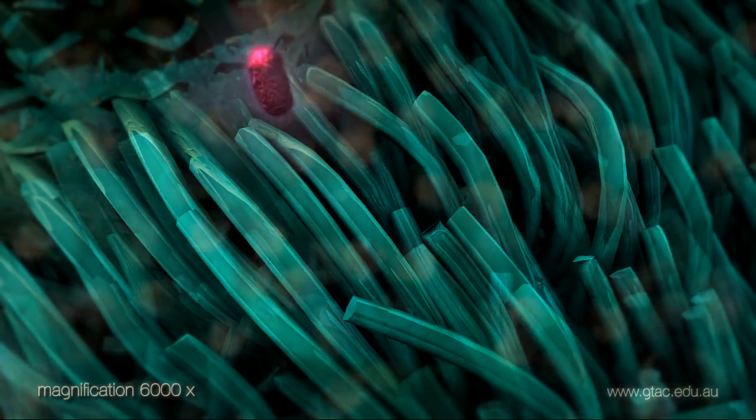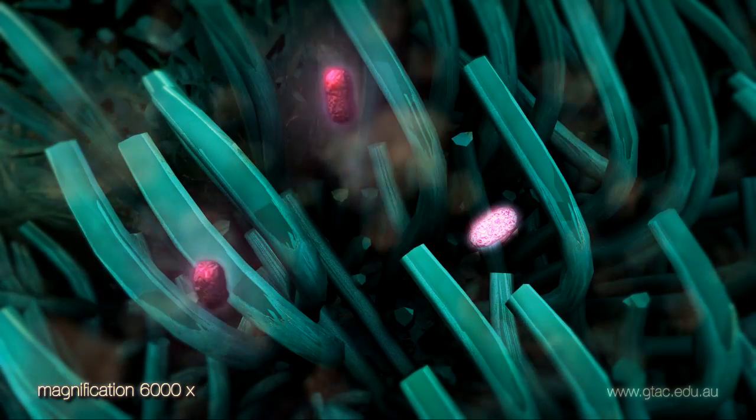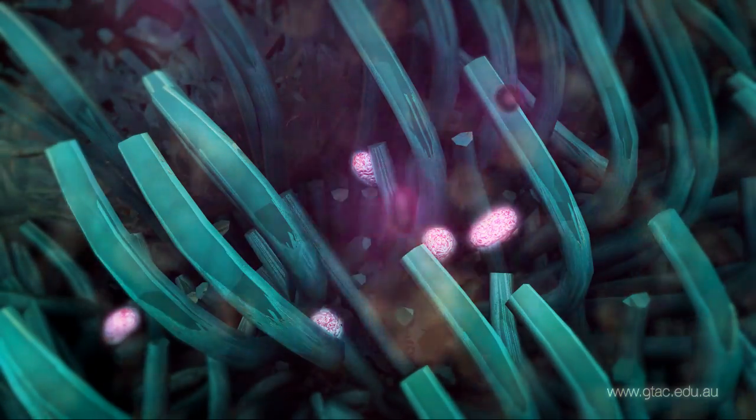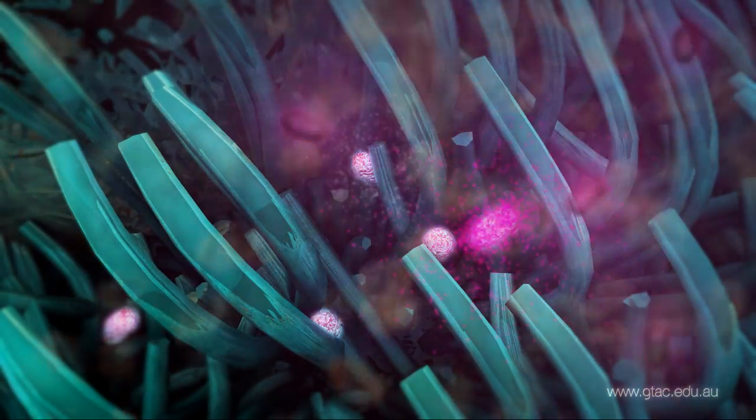The pertussis bacteria infiltrate this barrier and attach to the cilia. The bacteria secrete toxins into the area.